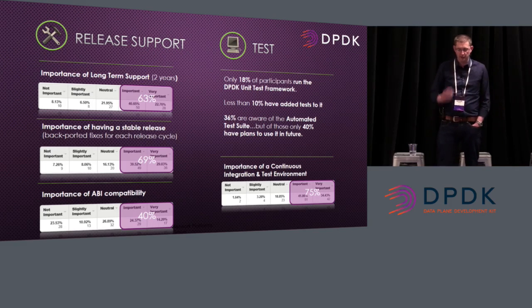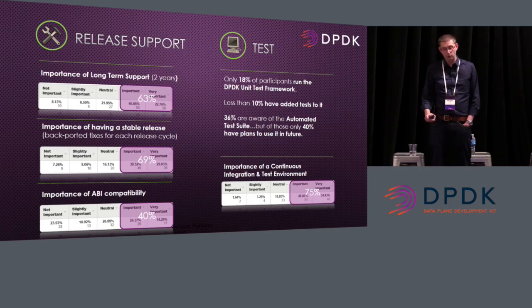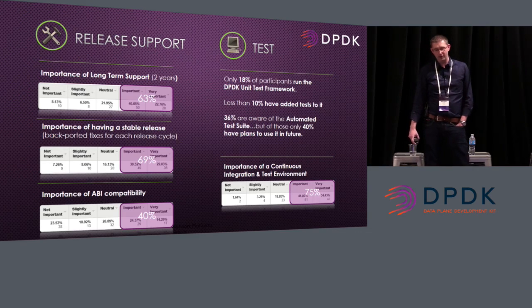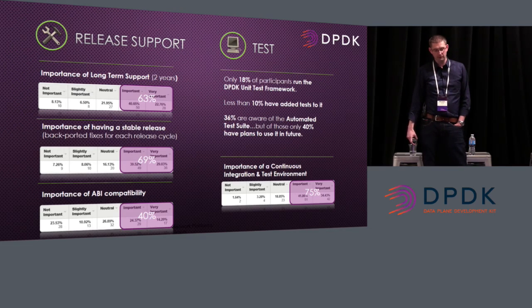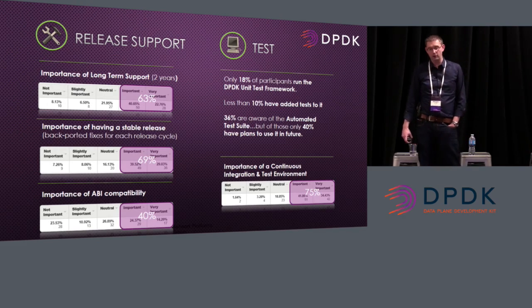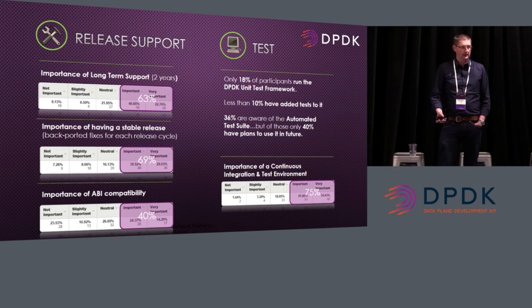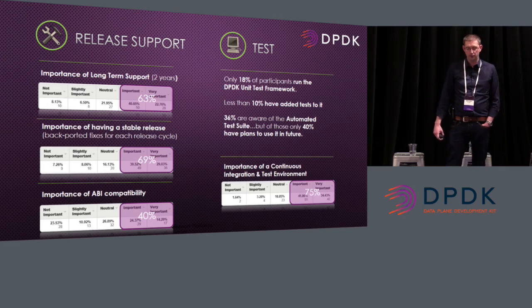On the testing side, there was an interesting finding: 40% of respondents were contributors, but only 18% said they actually run the DPDK unit test framework, and less than 10% have added to it. Either it's not working or people don't know about it — but they're very low numbers. 36% are aware of the automated test suite, but only 40% have plans to use it in the future. The data raises questions about whether investment in these tools is justified. And again, 75% said we should have a continuous integration and test environment.